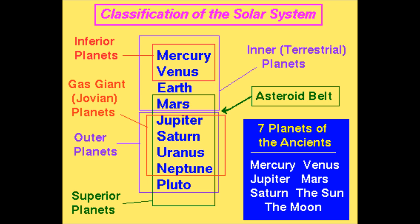Basically, inferior and superior refers to how much closer or further away a planet is from the Sun than the Earth is. The inferior planets are Mercury and Venus, as they are closer to the Sun than the Earth is.